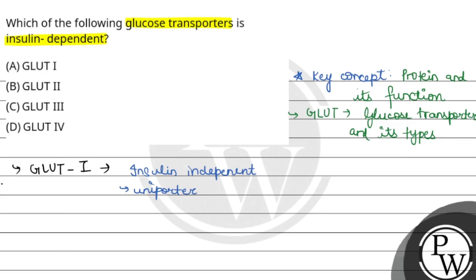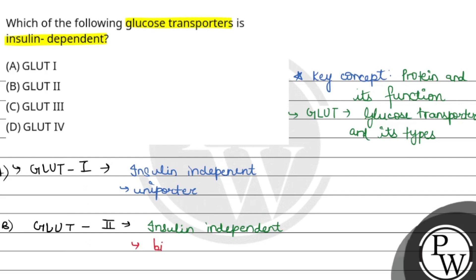Moving to the second option, GLUT2. GLUT2 is also an insulin-independent glucose transporter. It is a transport protein that works in a bi-directional manner — it can transport glucose in both directions.